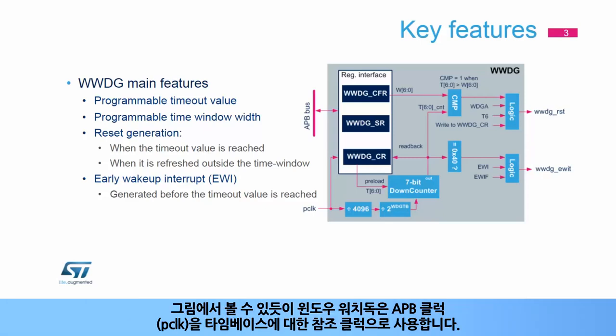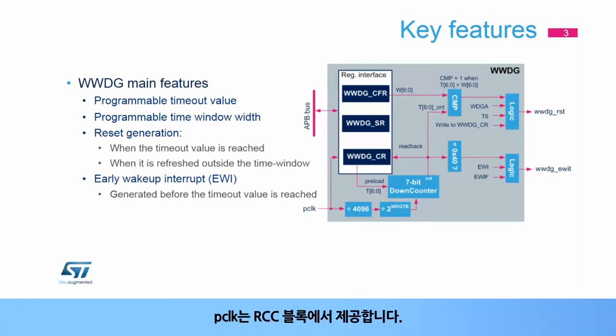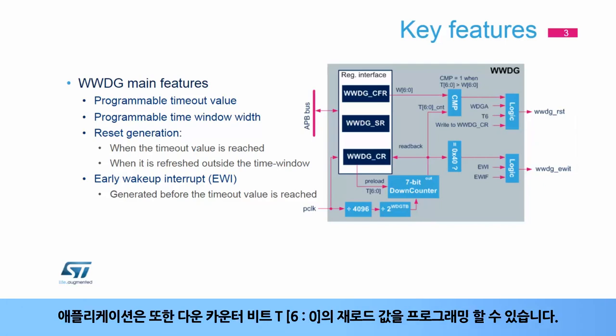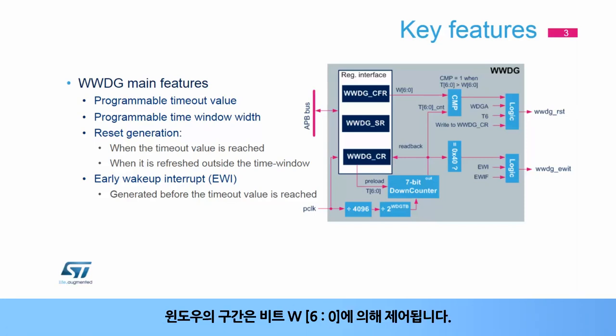As shown in the figure, the window watchdog uses the APB clock or PCLK as reference clock for its time base. The PCLK is provided by the RCC block. This clock is divided by 4096 and by a value programmed by the application. The application can also program the reload value of the down counter bits T[6:0]. The window width is controlled by bits W[6:0].